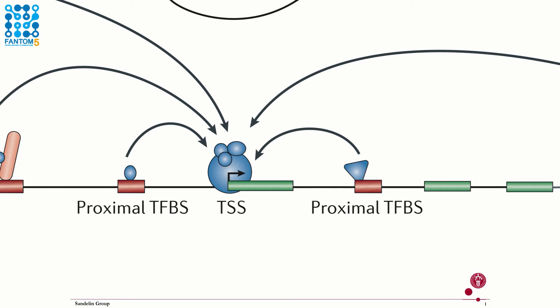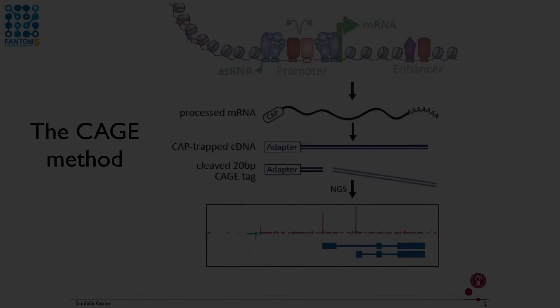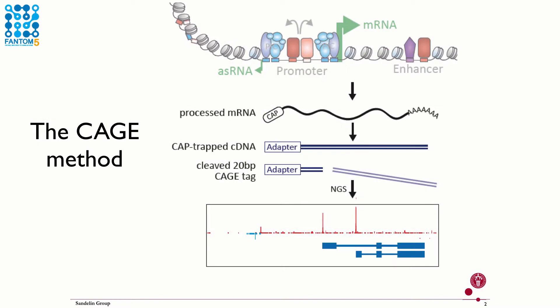The FANTOM project set out to find all the promoters and their usage across the human body. To this end they developed a method called CAGE, Cap Analysis of Gene Expression. CAGE captures capped mRNAs, which is followed by the sequencing of the first 20 to 30 base pairs of the resulting full-length cDNA.